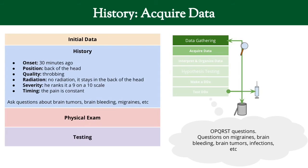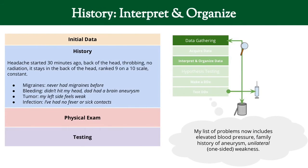Other questions are specific to the diagnoses we're considering. For migraines, he's never had any before. For bleeding, he didn't hit his head, but his dad has had a brain aneurysm. For tumor, the left side feels weak — that's something. And he's had no infectious sick contacts. We now make a problem list: high blood pressure, family history of aneurysm, and unilateral — one-sided — weakness.